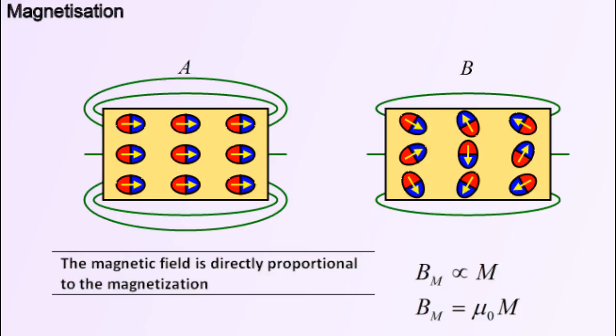For metals with a higher magnetization, the magnetic field is stronger. Since the magnetization of A is greater than the magnetization of B, the magnetic field of A would be greater than the magnetic field of B. So, the magnetic field is proportional to the magnetization. The higher the magnetization, the greater the magnetic field. The magnetic field can be expressed as mu zero times the magnetization M.